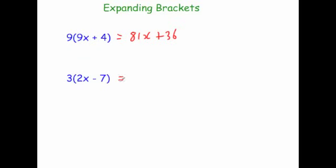Let's have a look at another one. 3 bracket 2x minus 7. Well 3 times 2x is 6x, and 3 times minus 7, well that's minus 21. So the answer would be 6x minus 21.